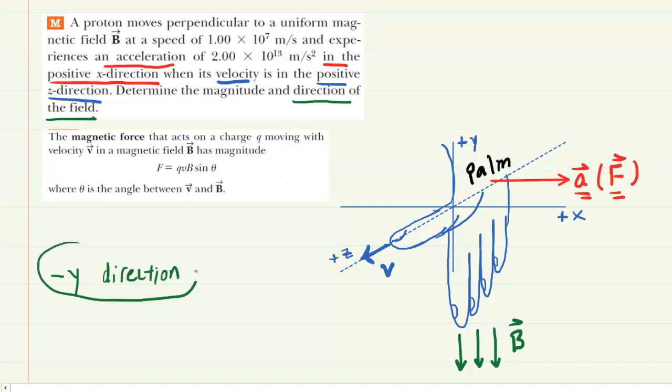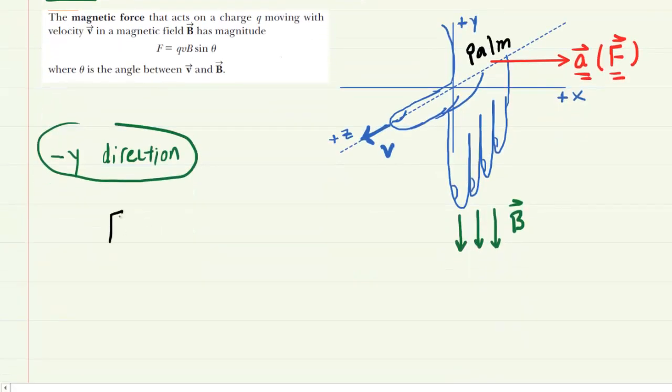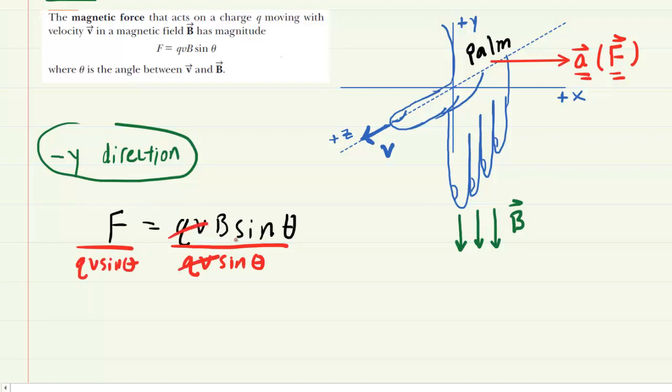Now all we need to do is determine the magnitude of the magnetic field. We can do that by applying this equation that we've learned in chapter 19 here. Now we want to solve this equation for b, which is the magnetic field. So let's first rewrite the equation. To solve for b, we can divide both sides by q v sine of theta. Therefore, the magnetic field is equal to the force divided by the charge times the speed times the sine of the angle.